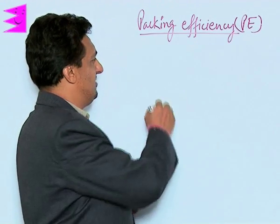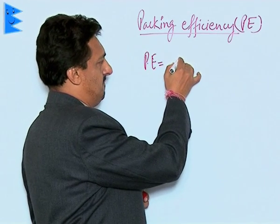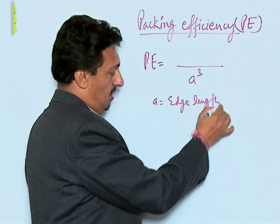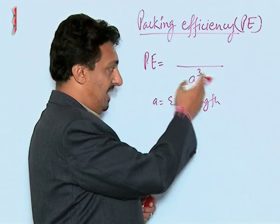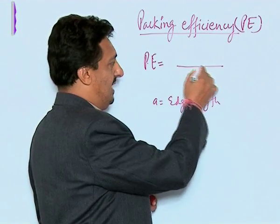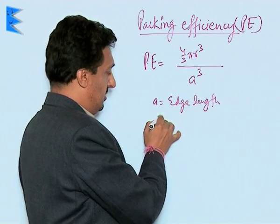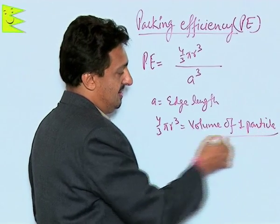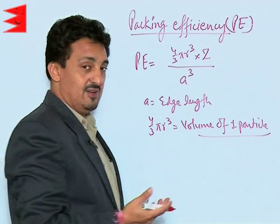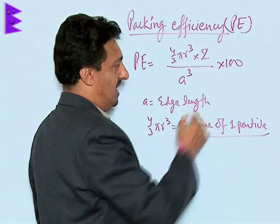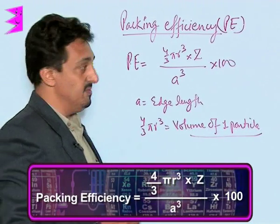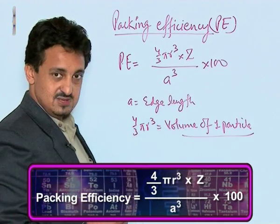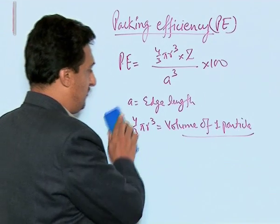The formula for packing efficiency uses the total volume of the unit cell, which is a³, where a is the edge length of the cubic unit cell. Out of this, we take 4/3 π r³ as the volume of one particle, multiplied by z, the number of particles per unit cell. Multiplying by 100 gives the packing efficiency as a percentage — actual volume occupied by particles divided by total available volume a³.